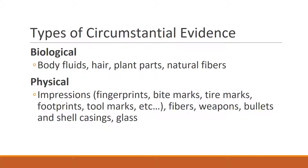These are circumstantial because even though there may be bodily fluids at the scene, that doesn't mean that person was there at the time of the crime. For example, in a rape case, semen is a little more than circumstantial, but it still falls under circumstantial evidence because it does not prove that the sexual contact was not consensual.